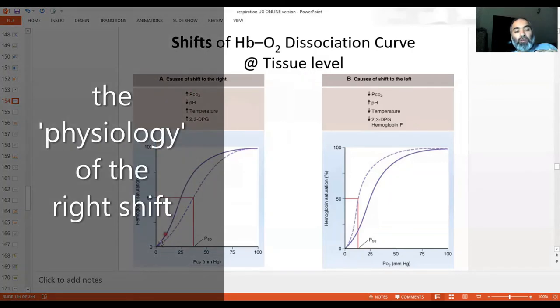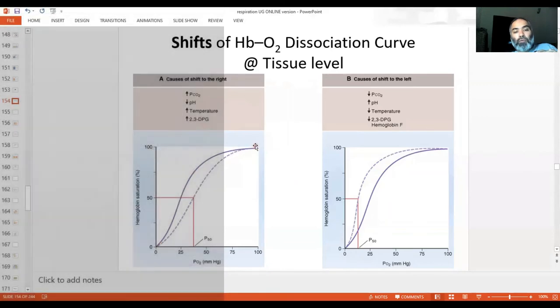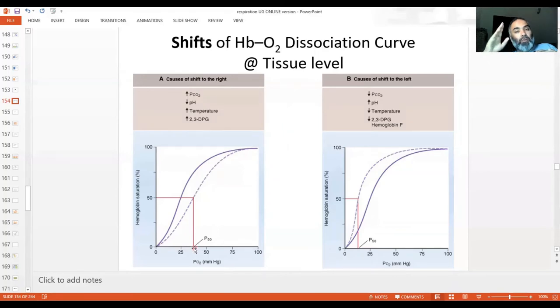So just look at the normal curve and then the dotted curve. And remember your P50. Now P50 is the partial pressure of oxygen which is required to saturate 50% of your hemoglobin. So put in another way, a PO2 of 26.7 mmHg is required normally when the curve is in its normal natural habitat to saturate 50% hemoglobin.